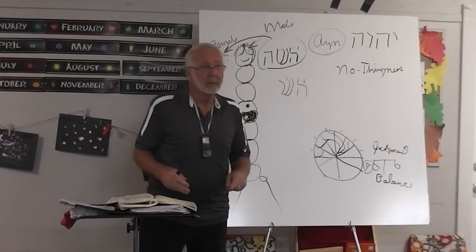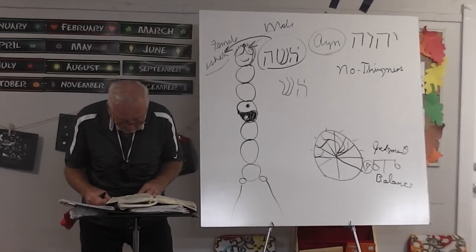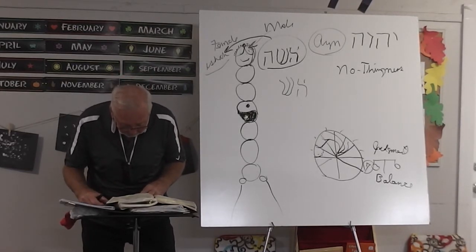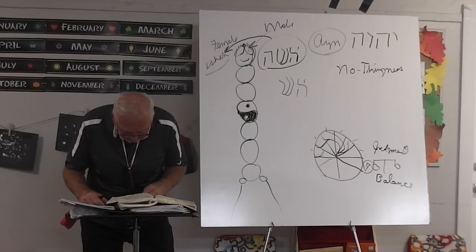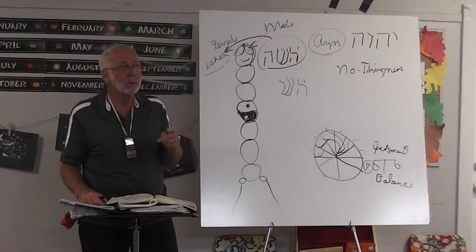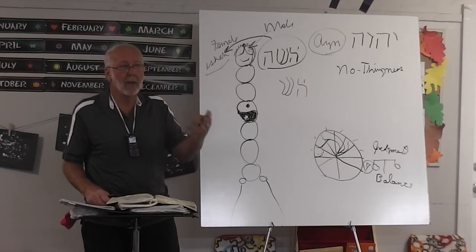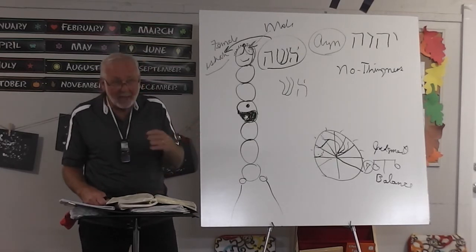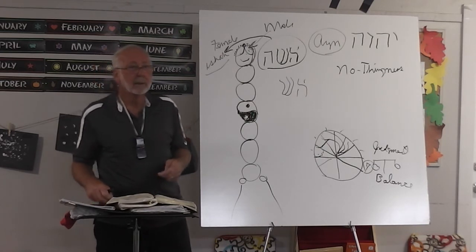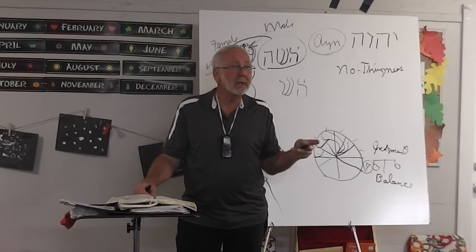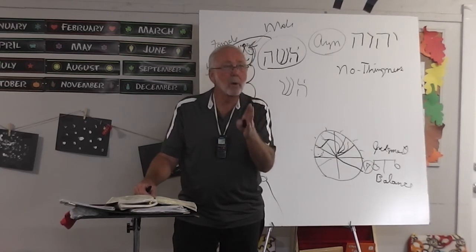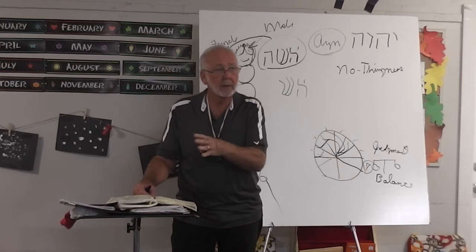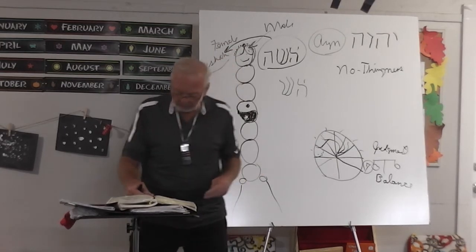Verse 7 says: 'Everyone that is called by my name, for I have created' — bariah, B-A-R-A-H. That word just means to create. 'Barashit barah' — in the beginning, God created. Bariah or barah — same word, meaning create. 'I have formed' — yitzira — meaning to put together. That's what God did in the womb of your mother. He put you together, formed you, built his house. 'Yea, I have made him' — asiah — out of nothing, pulling everything together.